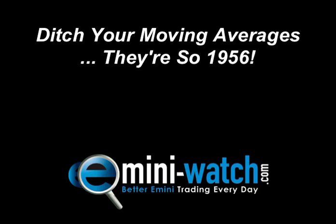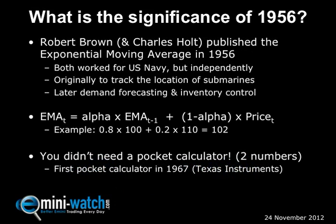Why are moving averages so 1956? What's the significance of the year 1956? 1956 was the year that Robert Brown and his co-creator Charles Holt published a book on the exponential moving average — the first time it came into the public consciousness. They'd been using the exponential moving average for eight or ten years previously, and both worked for the U.S. Navy, independently. Originally the exponential moving average was used to track the location of submarines.